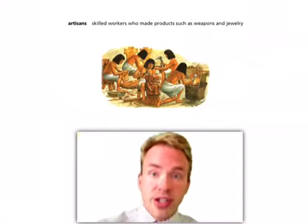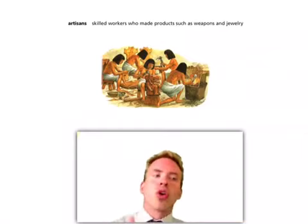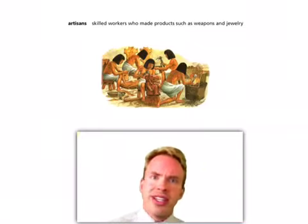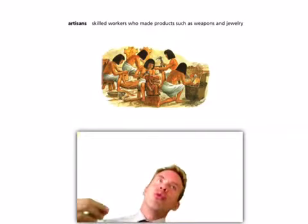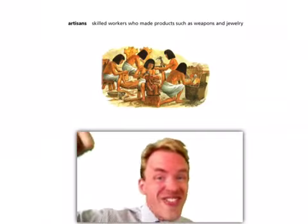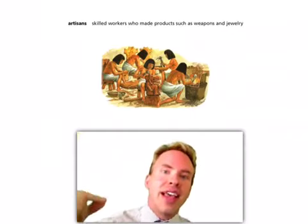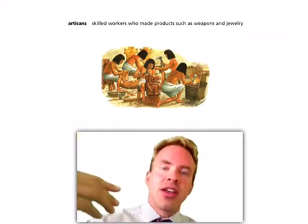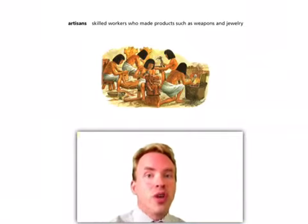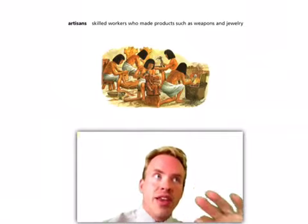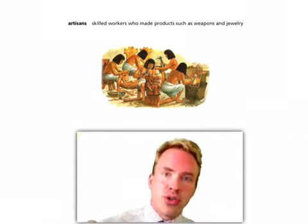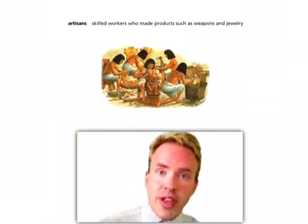One of the key things that freed-up person is going to end up doing is becoming an artisan — skilled workers who make products like weapons, jewelry, or a chair. Those artisans can then use their skills; the farmers can feed them, and they can start making more advanced things. Once you farm, you enable the human brain to start doing extra things in the form of that person who's been freed up from the farming labor.